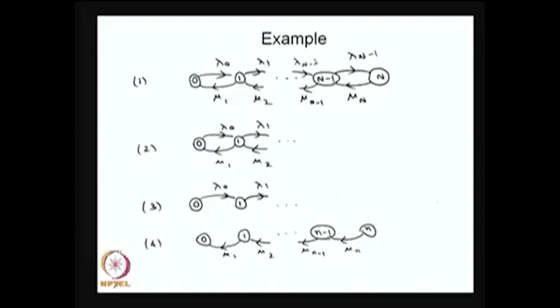Here are a few examples of birth-death processes. The first example is a finite state model with birth rates λ₀, λ₁, ..., λₙ₋₁ and death rates μ₁, μ₂, ..., μₙ. The second example is an infinite state birth-death process. The third example has all death rates equal to zero. The fourth example has all birth rates equal to zero — that is also possible.